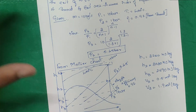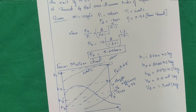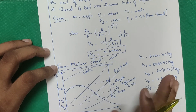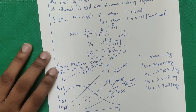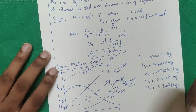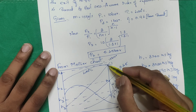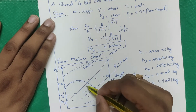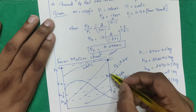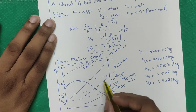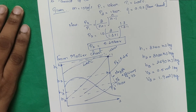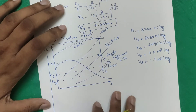Since nozzle efficiency applies only from the throat to exit (discharging portion), do not apply efficiency to the throat velocity calculation. If no specific mention of discharging portion is given, consider efficiency from the inlet. On the Mollier chart: locate 400°C and 10 bar (point 1), draw vertical line to 1 bar (point 3), intermediate p2 = 5.45 bar. All points are superheated so no dryness fraction needed.